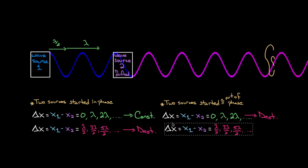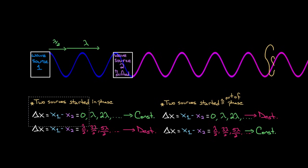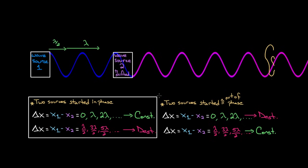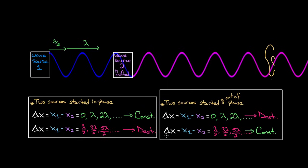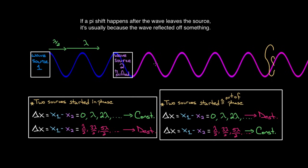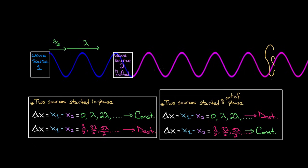So when the two sources start pi out of phase, instead of leading to destructive, half-integer path length differences lead to constructive interference. These two ideas are the foundation of almost all interference patterns you find in the universe. The sources don't actually have to start out of phase — sometimes waves get shifted along their travel. Regardless, if any of them get a pi shift either at the beginning or later on, you use the second condition to figure out constructive or destructive. If neither gets a phase shift — or interestingly, if both get a phase shift — you use the first condition.